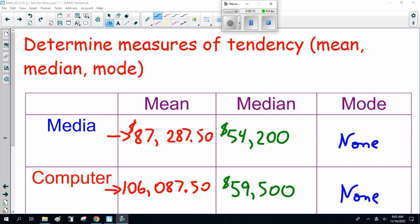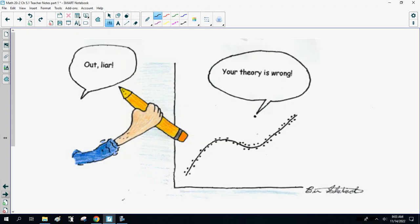Now, we've gone over mean, median, and mode for the various businesses. Let's do a couple more examples. But first, I want to talk about outliers. Not out, comma, liar, an outlier.